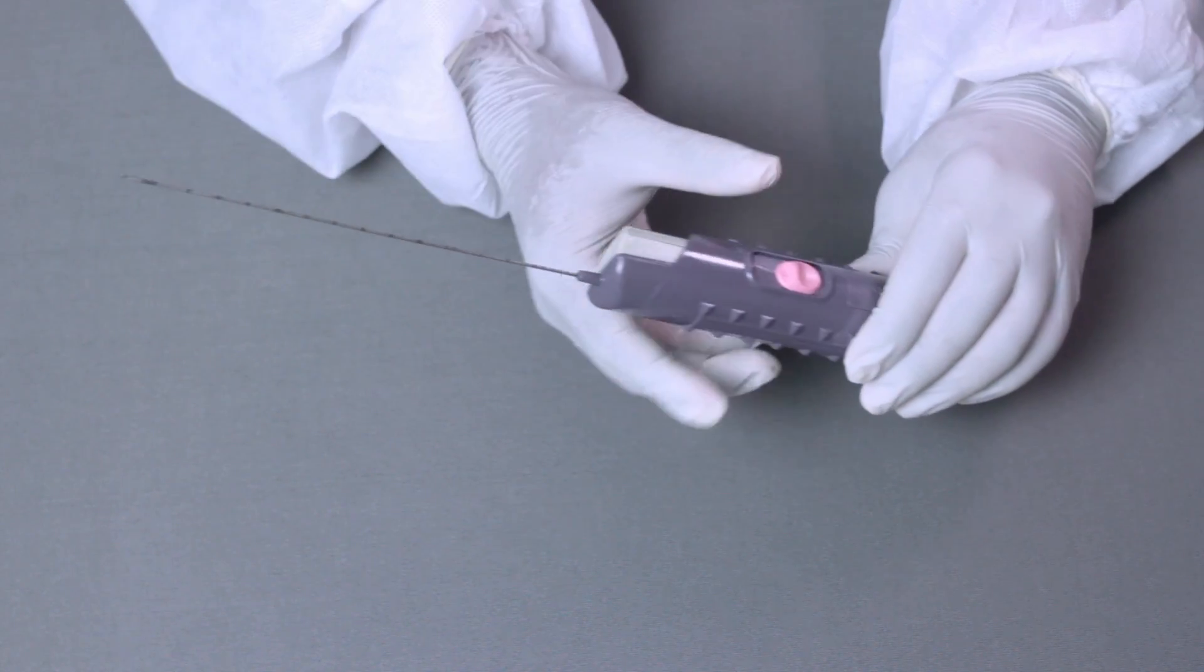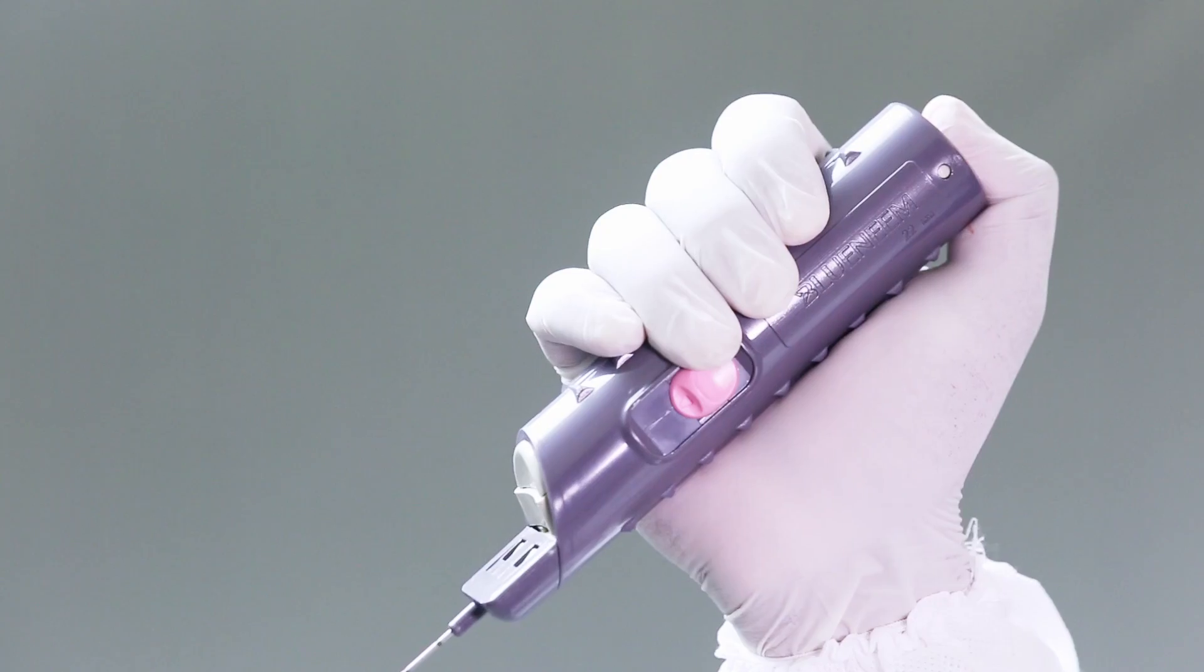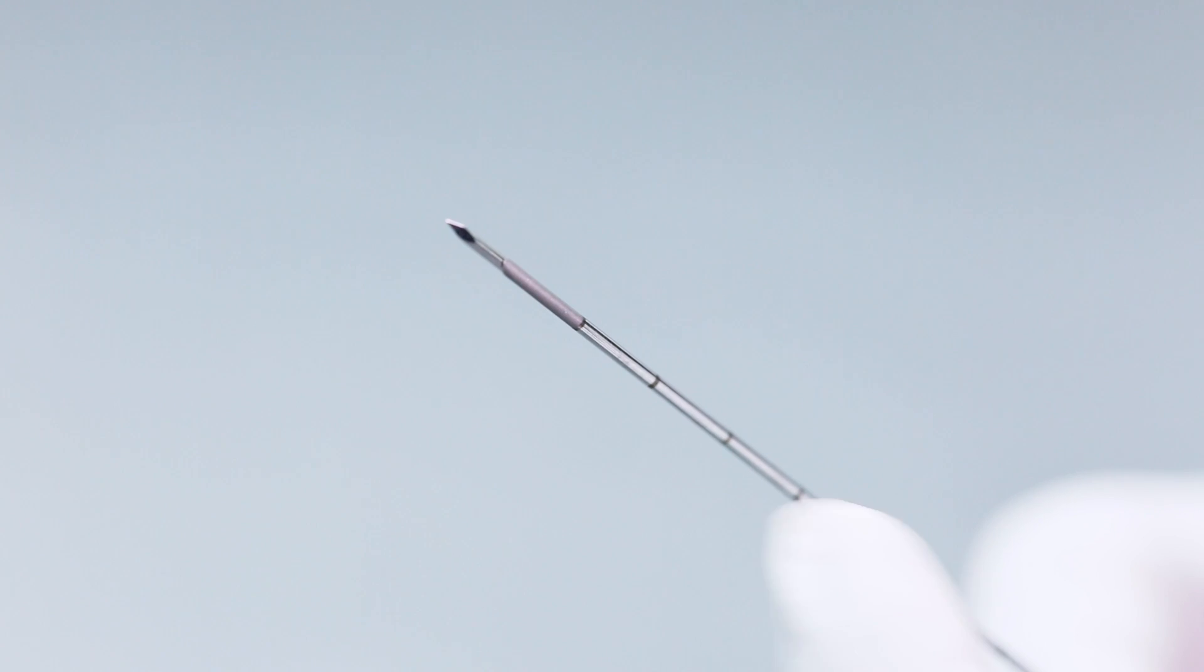There are two buttons to fire the gun, one at the side and the other at the bottom. Using image guidance, insert the coaxial needle just proximal to biopsy area.